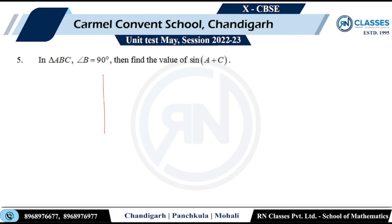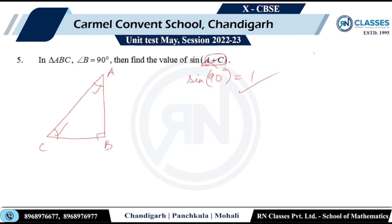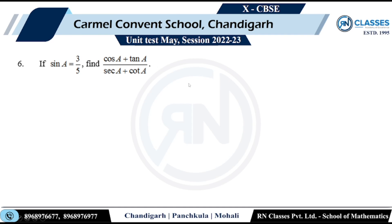Question five: in triangle ABC, angle B is 90°. Find the value of sin(A + C). Since angles A and C together make up the remaining 90°, A + C = 90°, so sin(A + C) = sin 90° = 1.